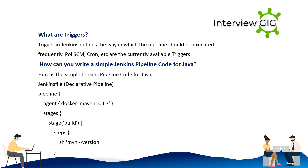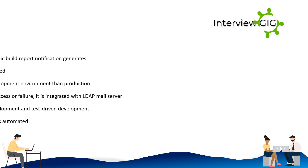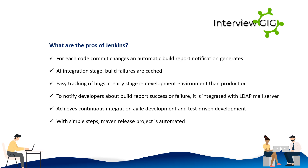Here is a simple Jenkins pipeline code for Java — Jenkinsfile declarative pipeline: pipeline { agent { docker 'maven:3.3.3' } stages { stage('Build') { steps { sh 'mvn --version' } } } }